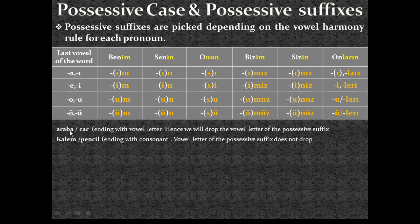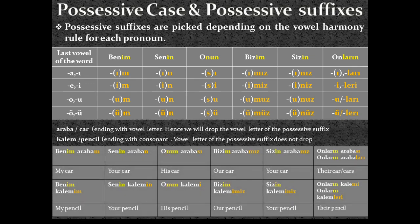Now let's see the examples. There are two words — possessed nouns. One is 'araba', ending with a vowel letter, so the last letter 'a' is also the ending letter. Another is 'kalem', where the last vowel 'e' is not the ending letter. For 'araba', the last vowel 'a' falls into the first line of the rule table, so it is also the ending letter as well as being the last vowel.